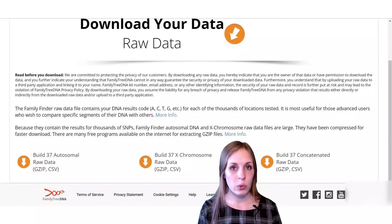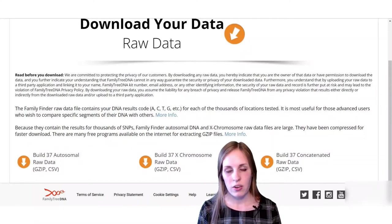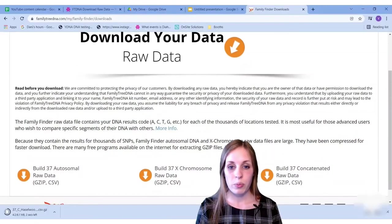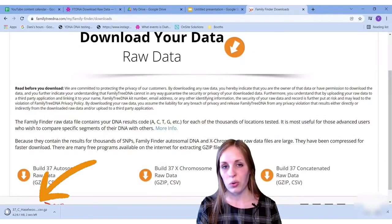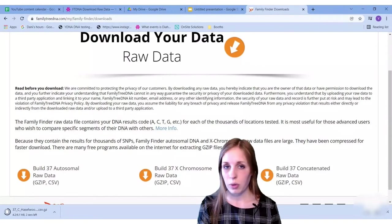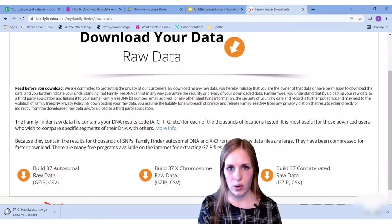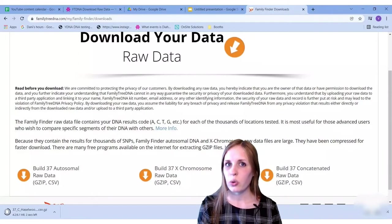Click on whichever one you'd like to download by clicking on the orange arrow button. When I clicked on the arrow button, it starts to download in the lower left corner of my screen. On your computer, it might download to a slightly different space or in a slightly different process. Once it's all done, you'll want to make sure you know exactly where it's saved.